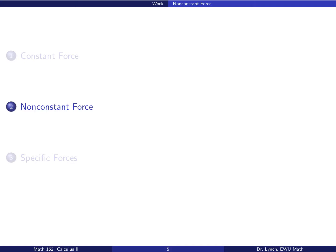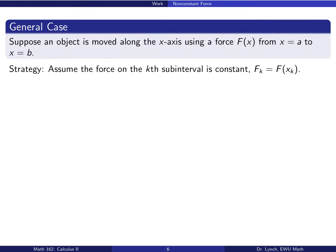More generally, we're going to be interested in computing work done when the force applied is non-constant. So in order to do this, we'll assume that an object is moved along the x-axis from x equals a to x equals b using some force f of x. So our strategy here is going to be to assume that the force on that k-th sub-interval is constant, f sub k, which is going to be given by f of x sub k.